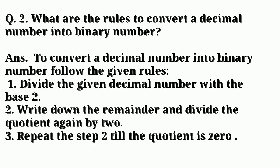Now the second question is what are the rules to convert a decimal number into binary number? Answer is to convert a decimal number into binary number, follow the given rules. First is divide the given decimal number with the base 2. Second is write down the remainder and divide the quotient again by 2. And third is repeat the step 2 till the quotient is 0.